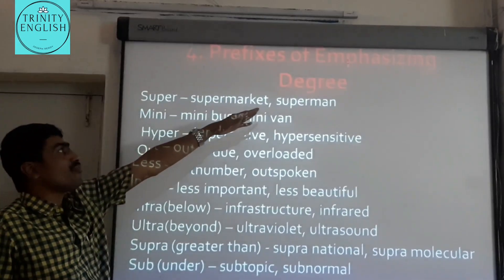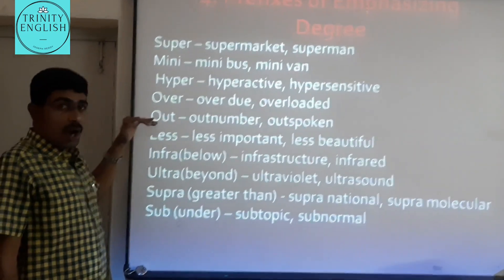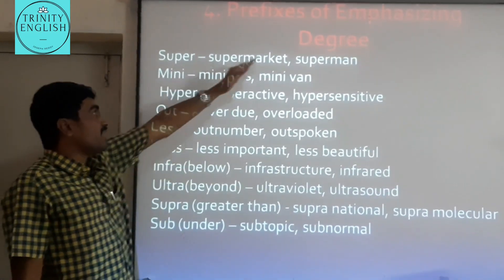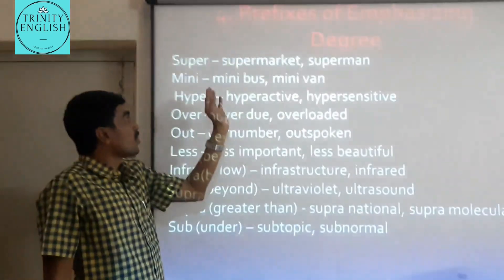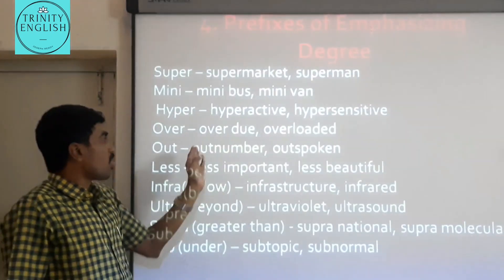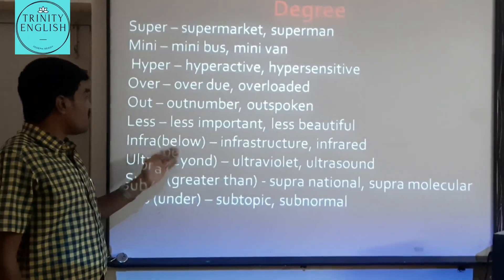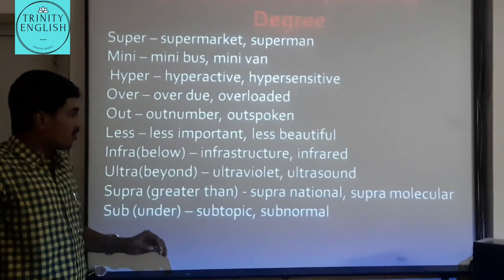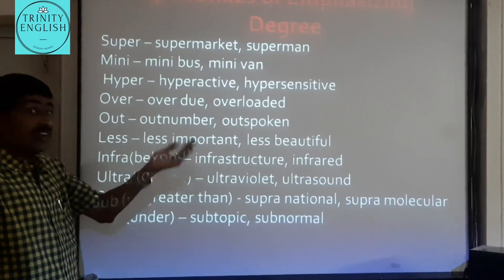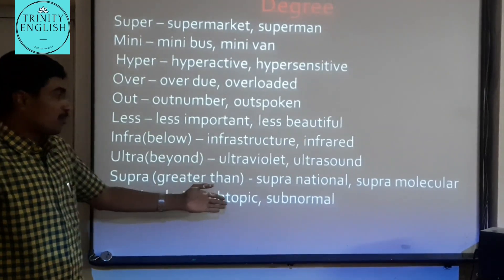Next are the prefixes of emphasizing degree: super-, mini-, hyper-, over-, out-, less-, infra-, ultra-, supra-, and sub-. Examples: 'supermarket,' 'superman'; 'minibus,' 'minivan'; 'hyperactive,' 'hypersensitive'; 'overloaded'; 'outnumber,' 'outspoken'; 'less important,' 'less beautiful.' 'Infra-' means below: 'infrastructure,' 'infrared.' 'Ultra-' means beyond: 'ultraviolet.' 'Supra-' means greater than: 'supranational,' 'supramolecular.' 'Sub-' means under: 'subtopic,' 'subnormal.'